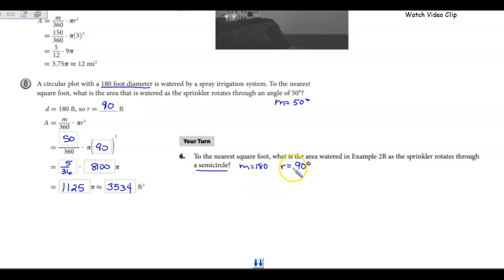Now that we found our radius and our measure of our arc, let's simplify to find terms of pi. I know that 180 over 360 is 1 half, and 90 squared is 8,100. So I get 1 half of 8,100 pi. I get 4,050 pi, which is approximately 12,723 square feet.